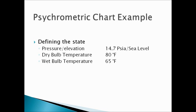In order for an air-fluid mixture to be defined, we need to know the pressure and two other independent properties. We'll assume sea level for the barometric pressure and use dry bulb and wet bulb temperatures to define the state.